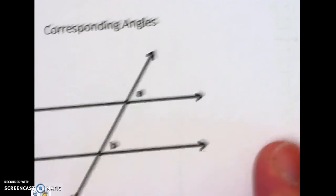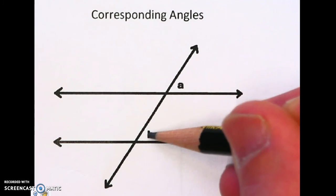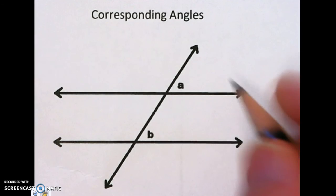And the last pair is corresponding angles. They're the same angle, but in a different spot, and they are congruent.